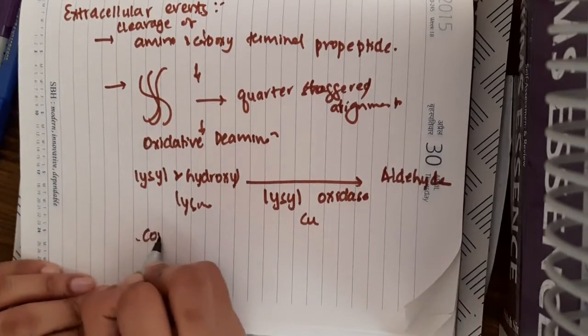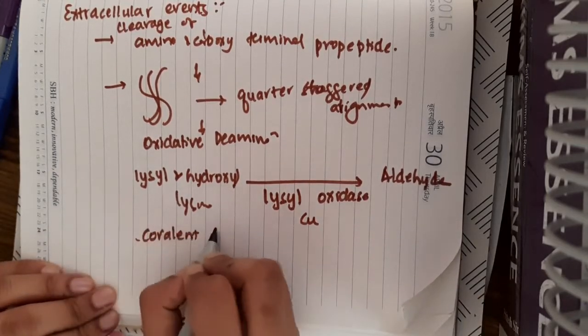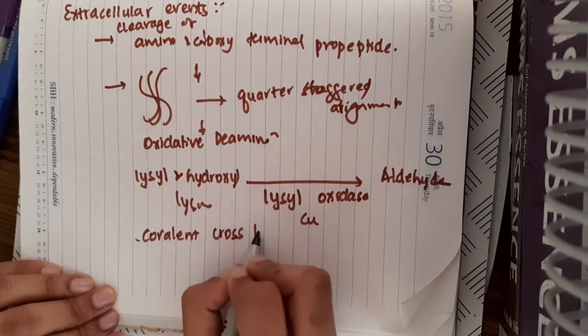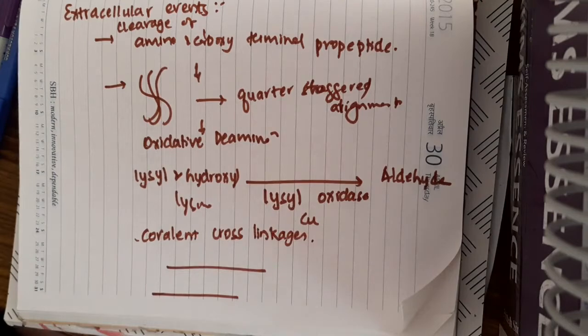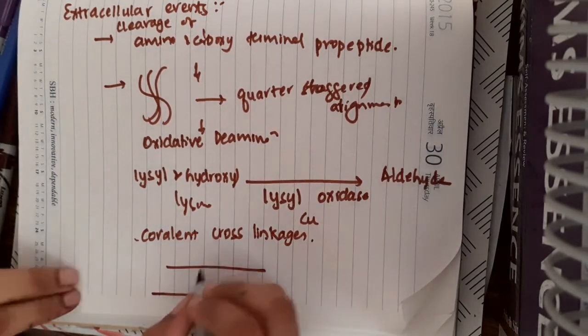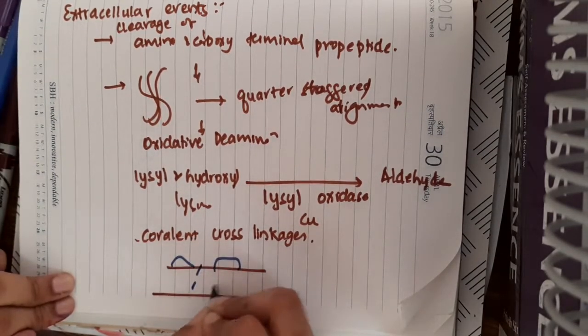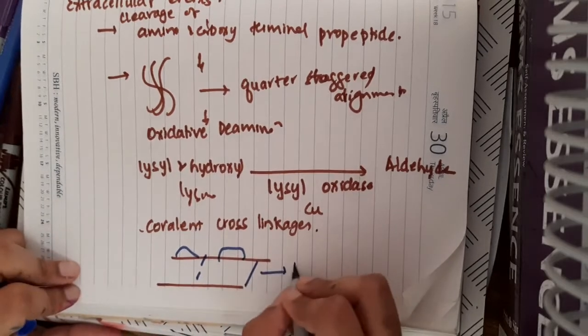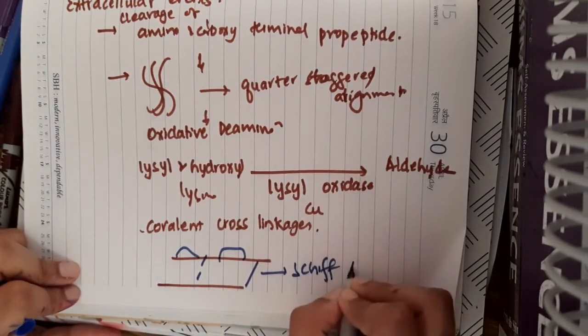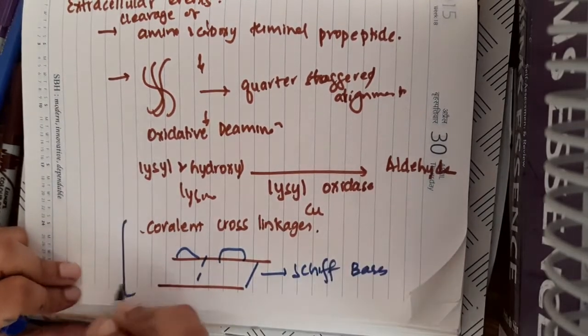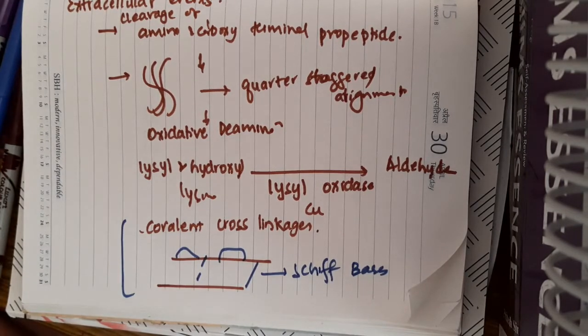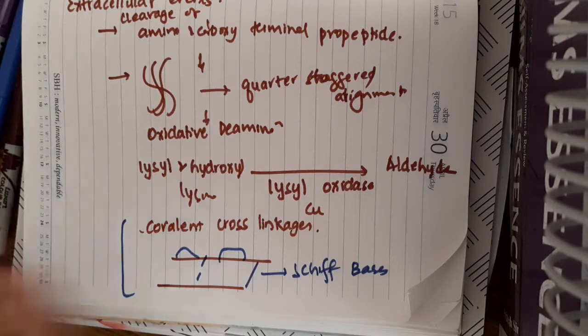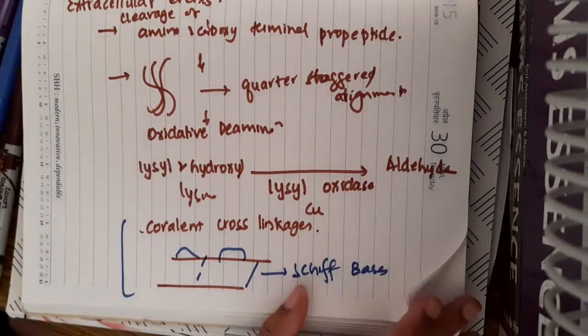Now, there is one more type of cross linkages that occur to make it stiff. That is, covalent cross linkages are seen, where you see both inter-chain and intra-chain linkages are seen with the help of Schiff bases. Thus, forming the stable, covalent and strong collagen molecule.